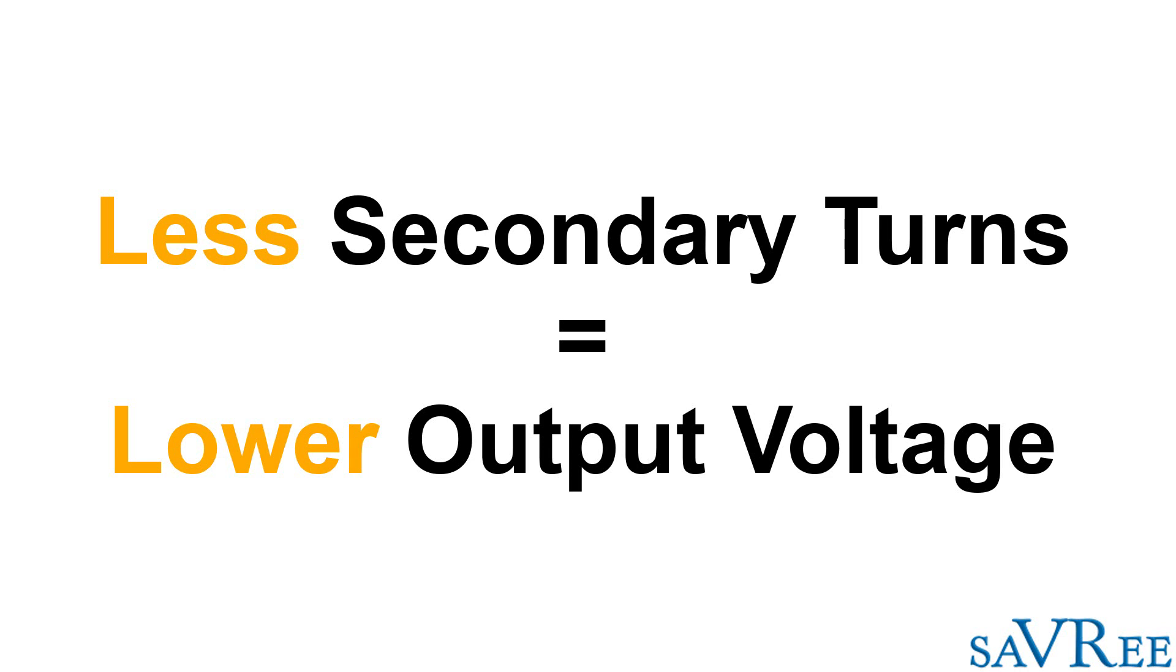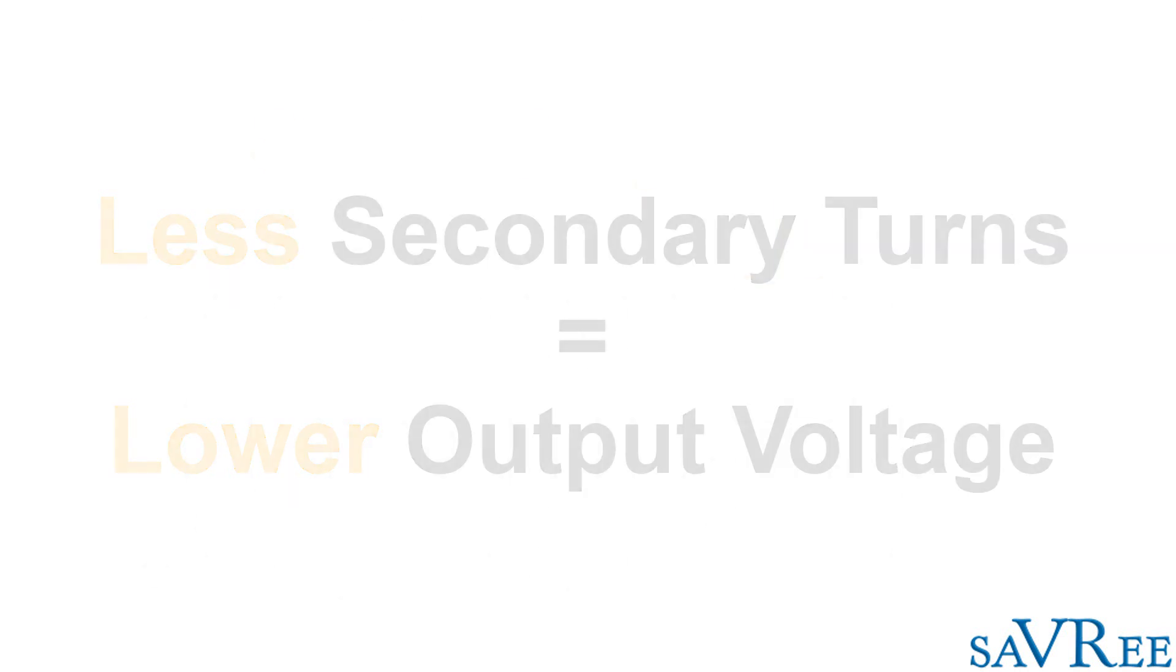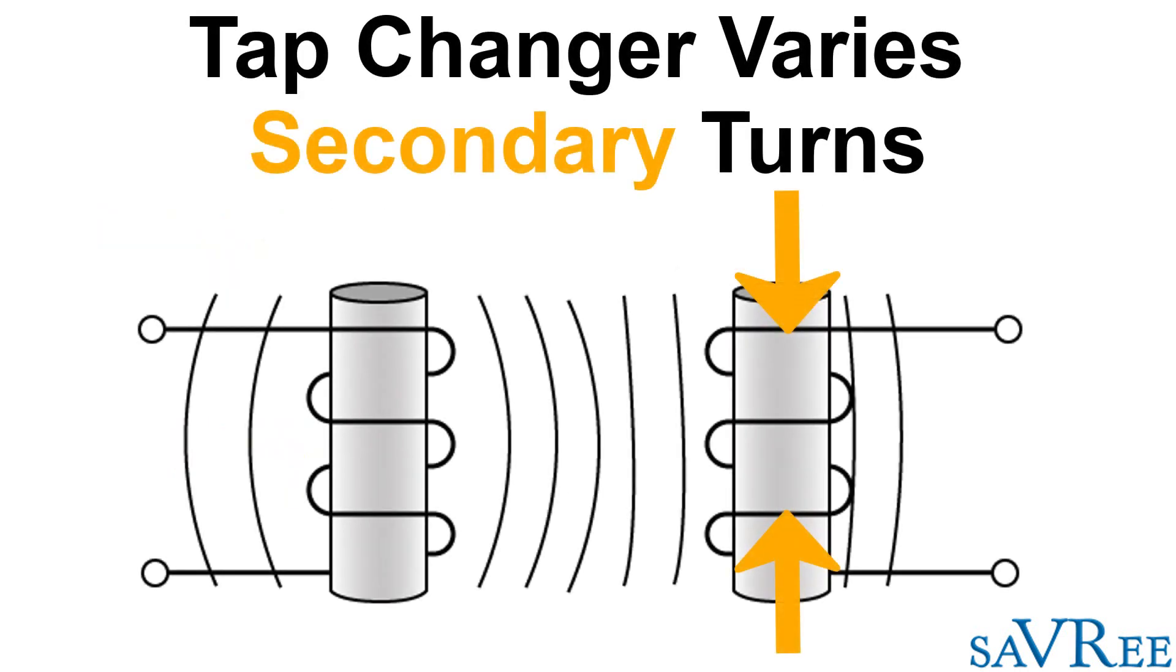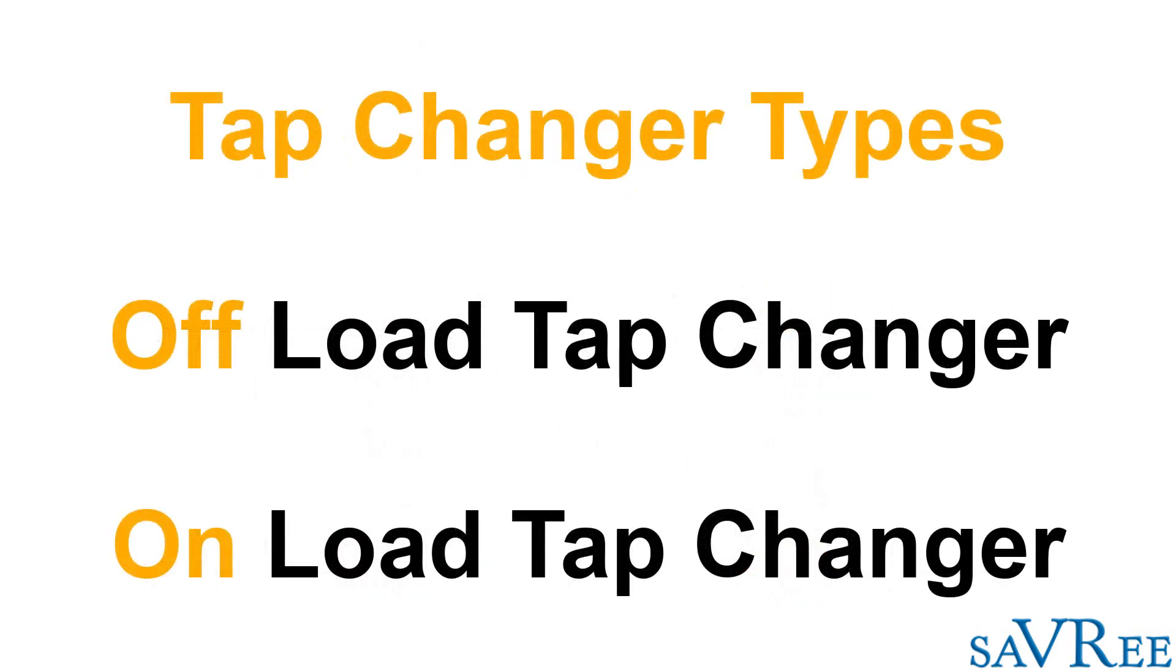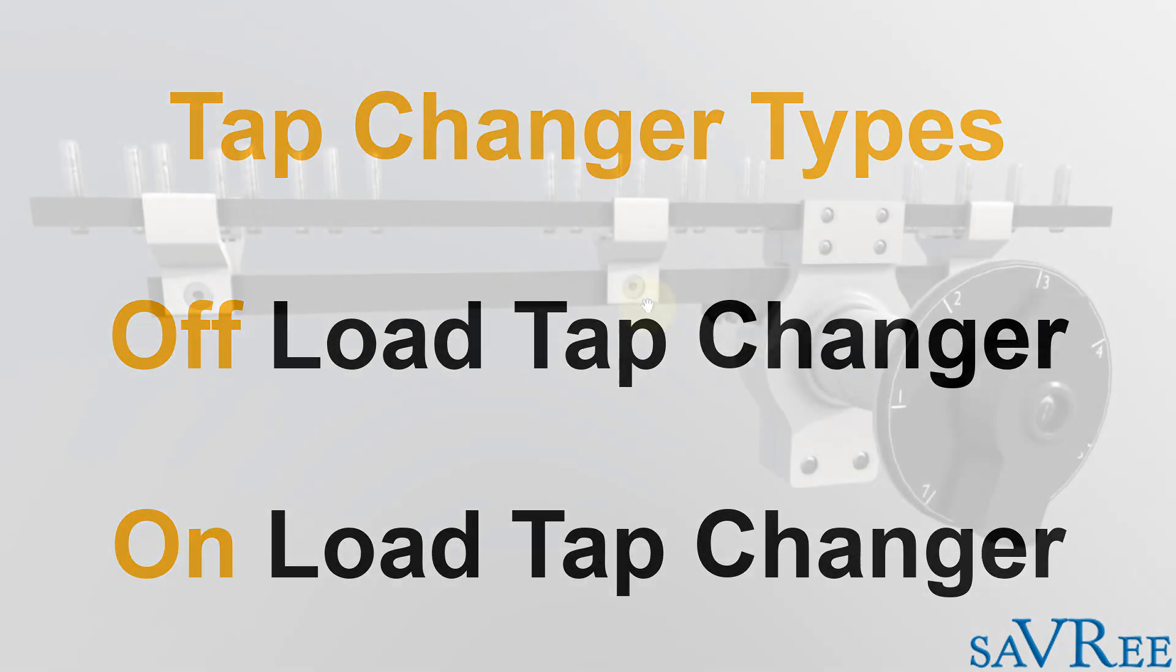And that's essentially what the tap changer is doing. Now we're doing this all manually by hand. On larger transformers, you won't be doing this manually by hand; you will have an automatic tap changer, and this is known as an on-load tap changer, which we're going to do another video about in the future.